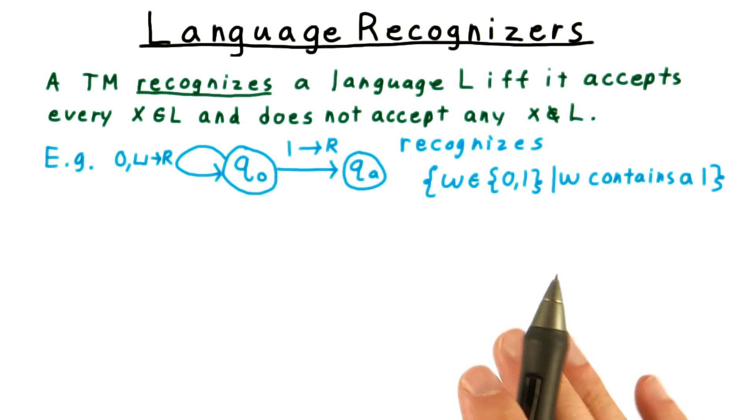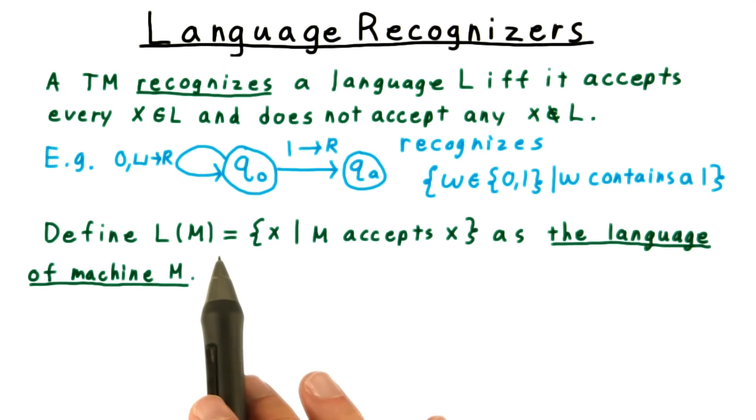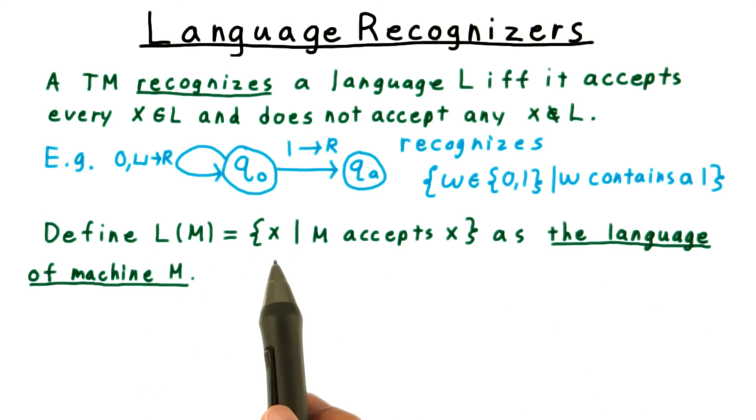At this point, it also makes sense to define the language of a machine, which is just the language that the machine recognizes. After all, every machine recognizes some language, even if it's the empty one. Formally, we define L of M to be the set of strings that M accepts. That's the language of the machine M.